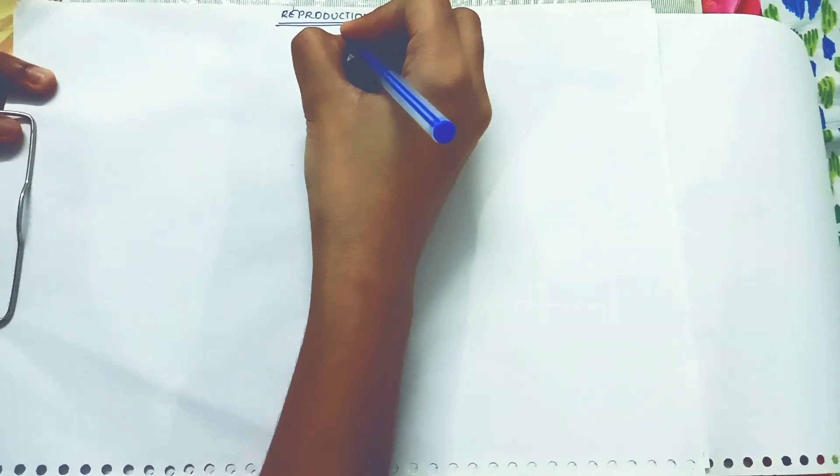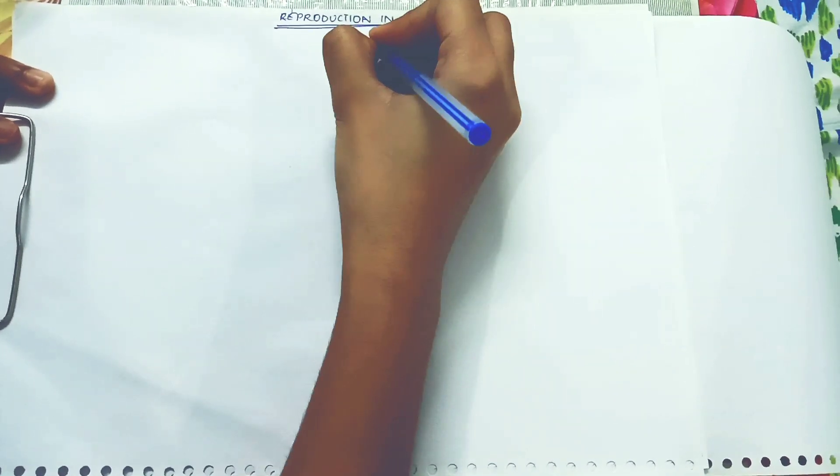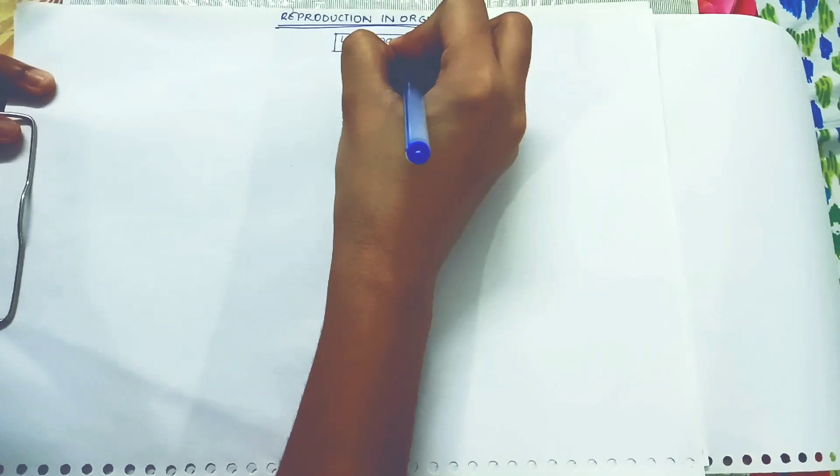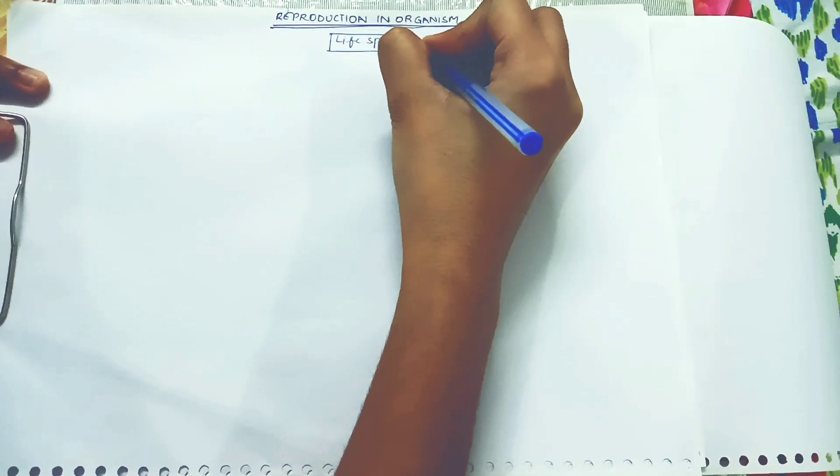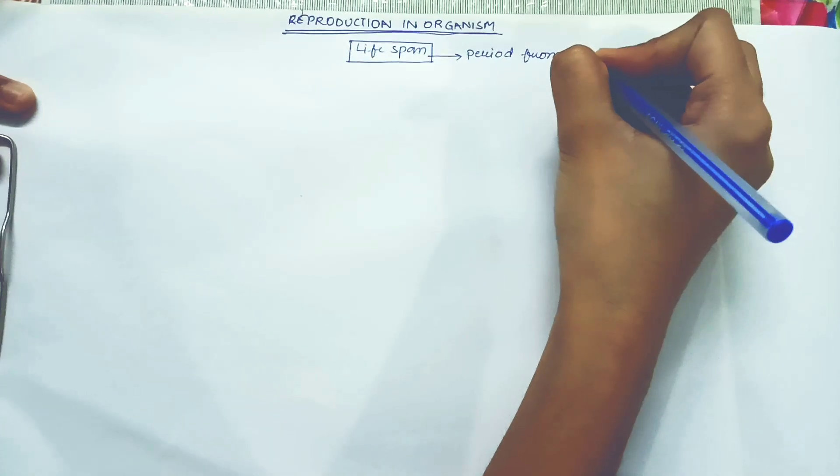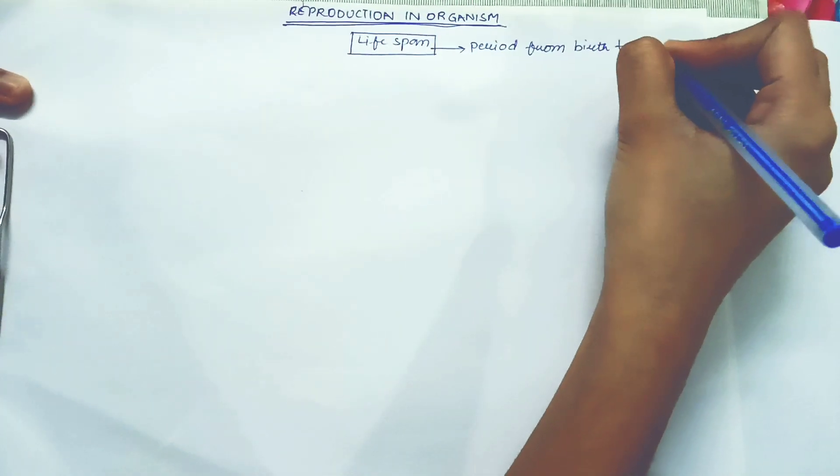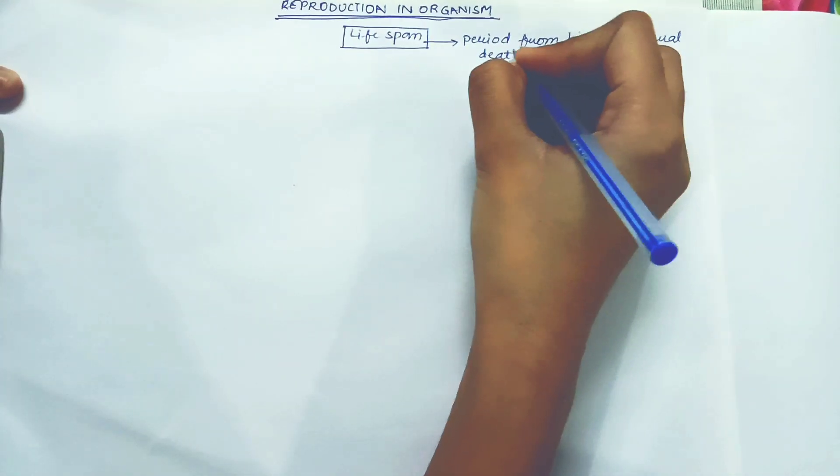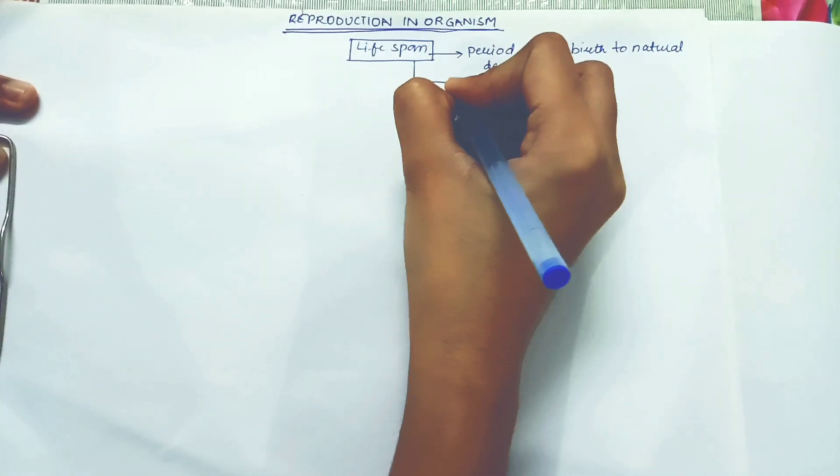So here we start. First topic which comes in this chapter is about lifespan. So it mainly talks about what is lifespan. The period from birth to natural death is known as lifespan.